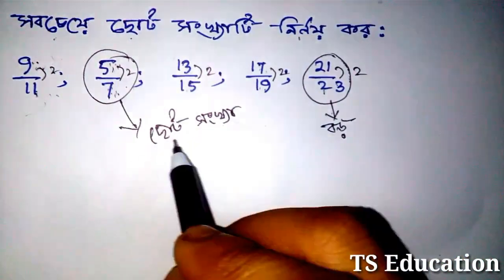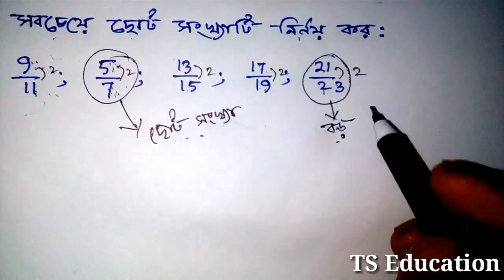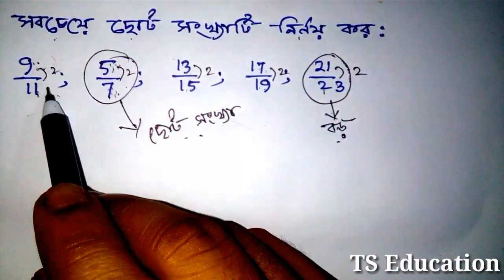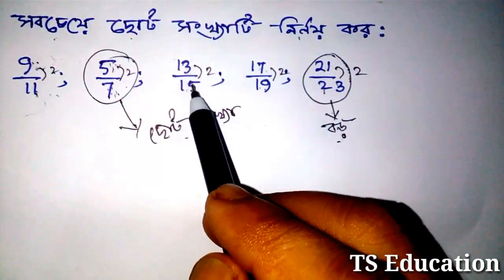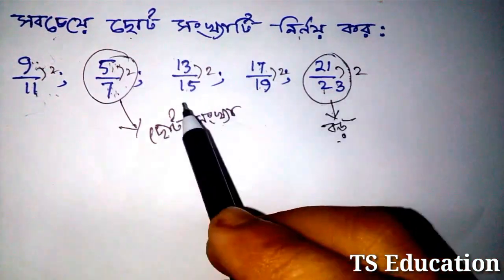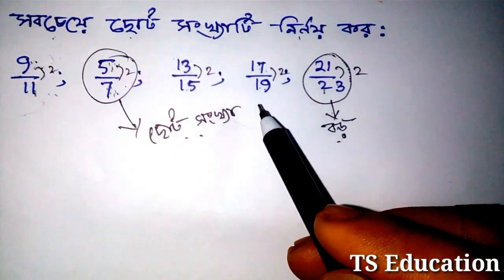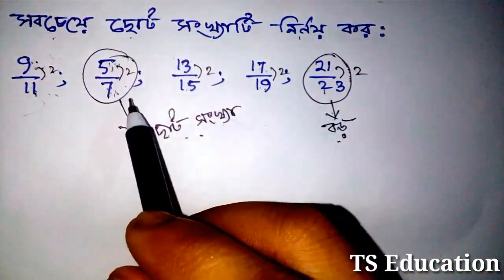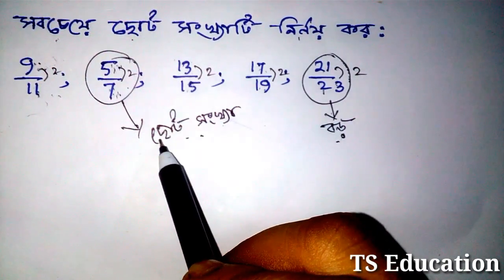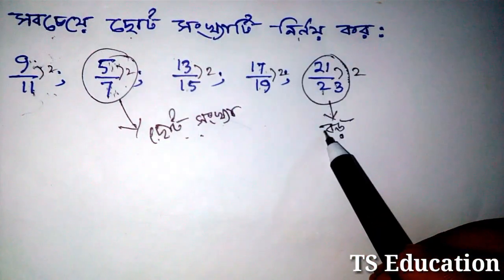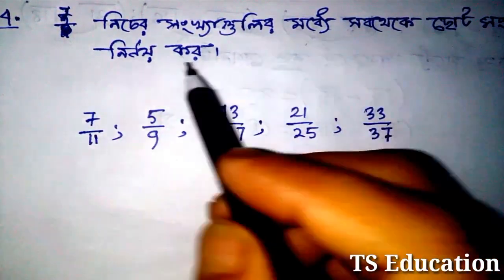Now we all know that the difference is the same. Alright, let's get a mark and keep — I prefer the way between the two sides. We see this result as we put a small number in common.